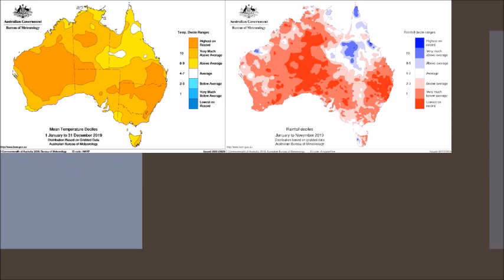The first graph here on the left shows Australia's temperatures from 2019. We can see those temperatures — taking all temperatures, averaging them out — and whether the year was hotter or below normal. You can see that most of Australia was very much above average and some of it was even pushing up into the highest on record — actually quite a lot of that area.